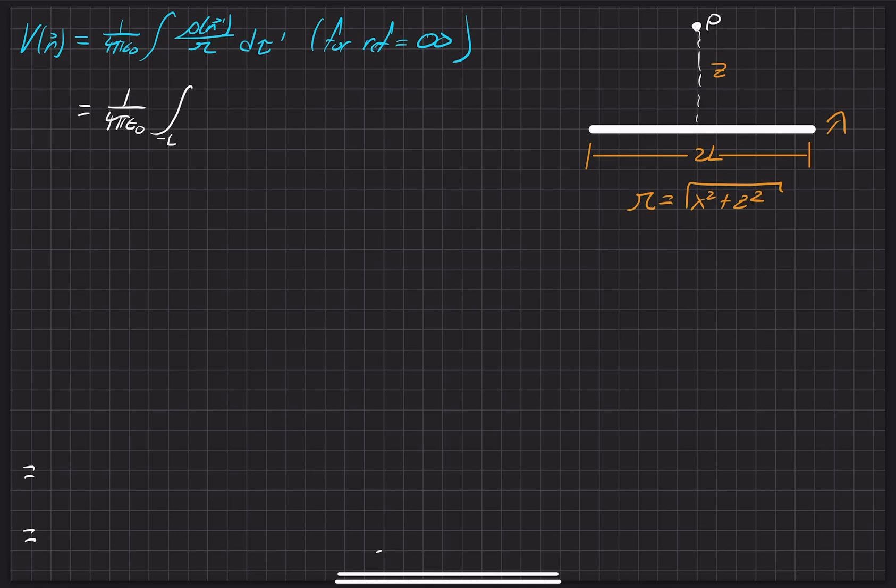We're actually going to use an integral now because we're going to go from negative L to positive L, since this is 2L long. In our integral, our rho, our charge density is just lambda here, since it's a linear charge density, and then our separation magnitude is going to be square root of this, and then DX.